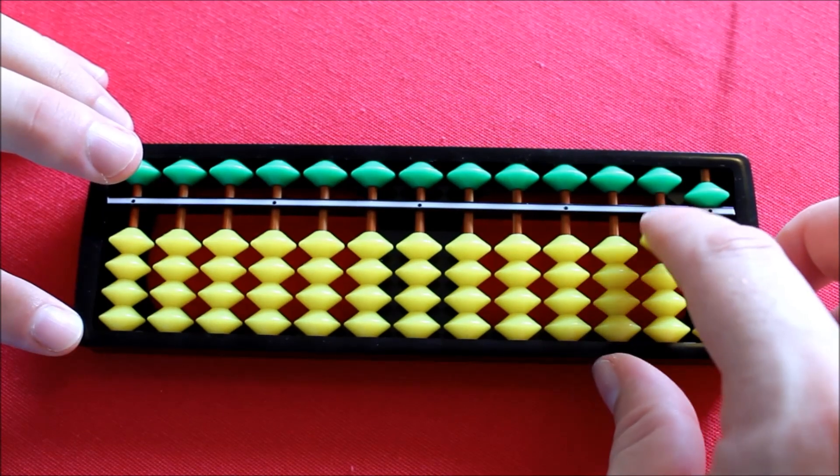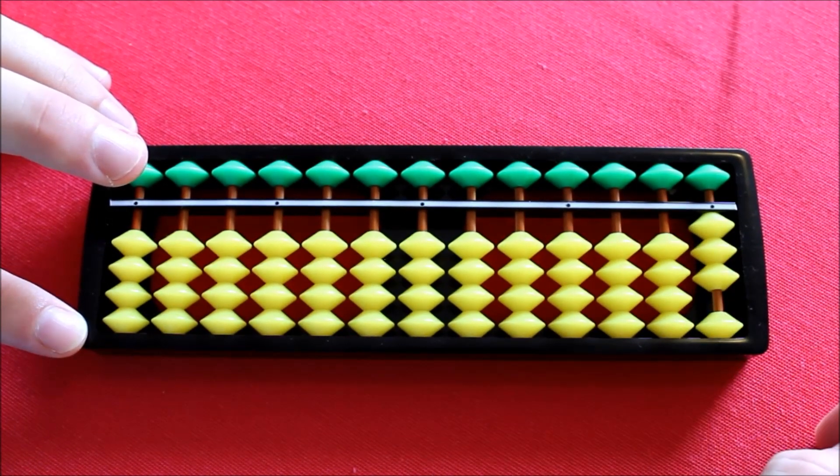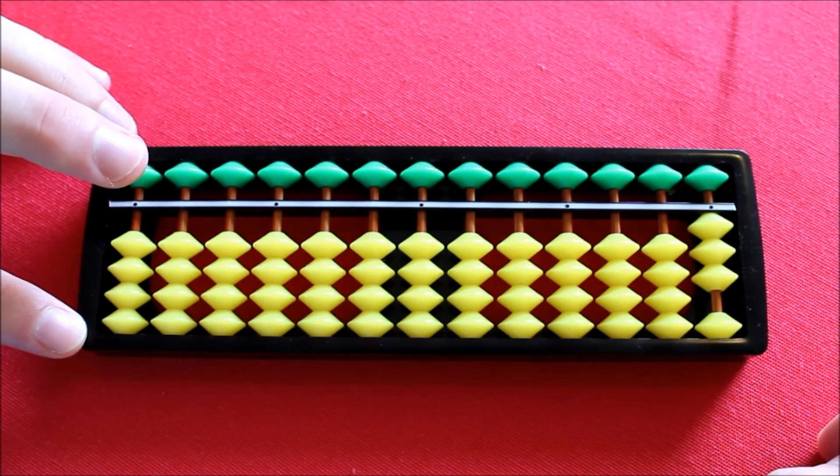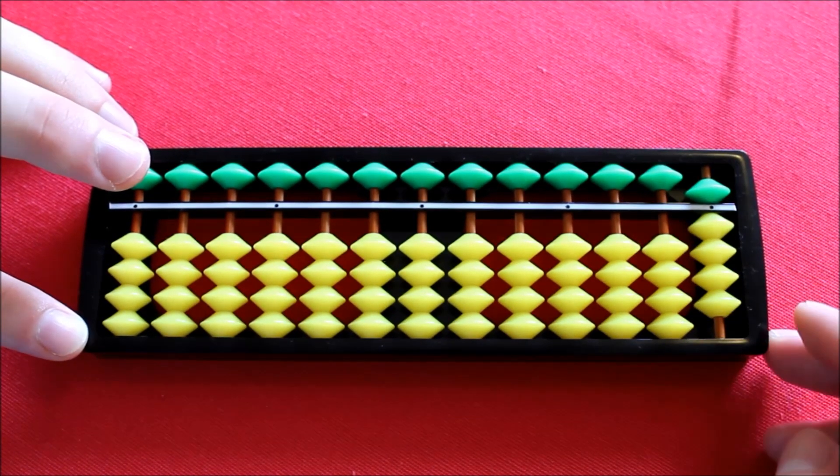Lastly, let's add by 6. This time I'll start with 3 on the Soroban. First of all, as with previous examples, we can do it directly by adding a 1 and a 5. That's adding 6.